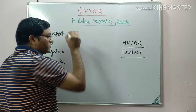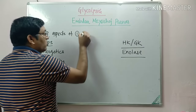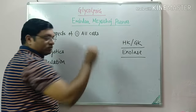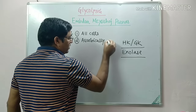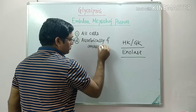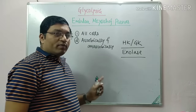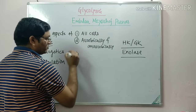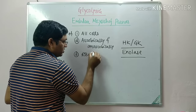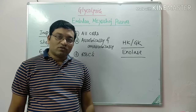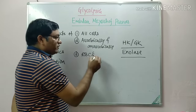The first important aspect is that Glycolysis, meaning dissolution of sugar, occurs in all cells of the body. Second, it operates both aerobically and anaerobically — this dual operation is a key feature of the pathway. Third, it is an important source of energy for matured RBCs. Because matured RBCs do not have mitochondria, oxidative phosphorylation cannot occur, making them completely dependent on the glycolytic pathway for energy.